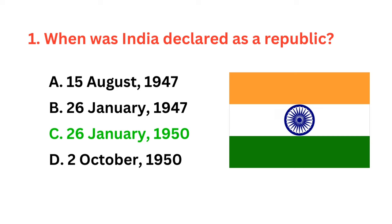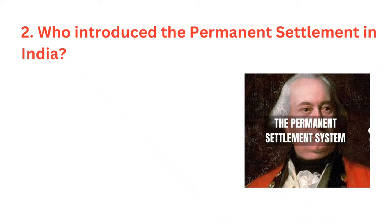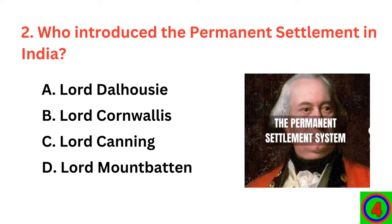Who introduced the permanent settlement in India? The correct answer is option B: Lord Cornwallis.